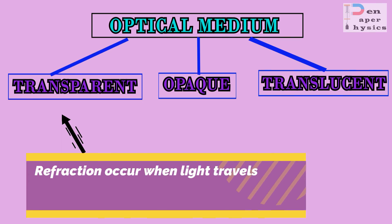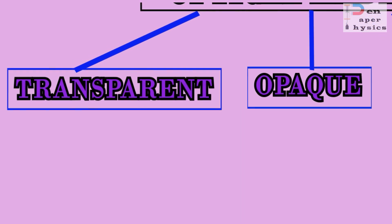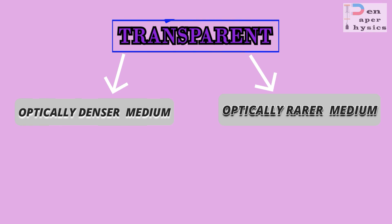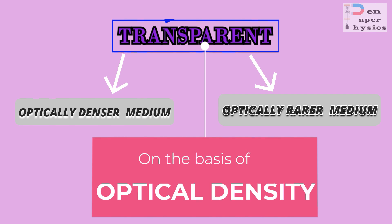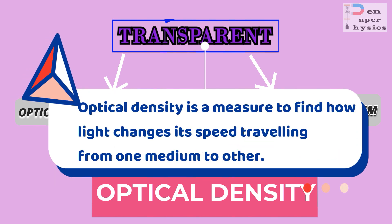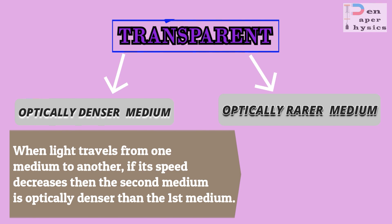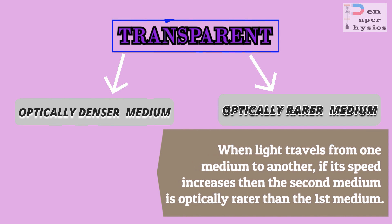Since refraction occurs when light travels from one transparent medium to another, we will focus on transparent mediums. We can categorize transparent mediums into two types: optically denser medium and optically rarer medium, depending on optical density. Optical density is a measure of how light changes its speed traveling from one medium to another. When light travels from one medium to another and its speed decreases, the second medium is optically denser. When its speed increases, the second medium is optically rarer.